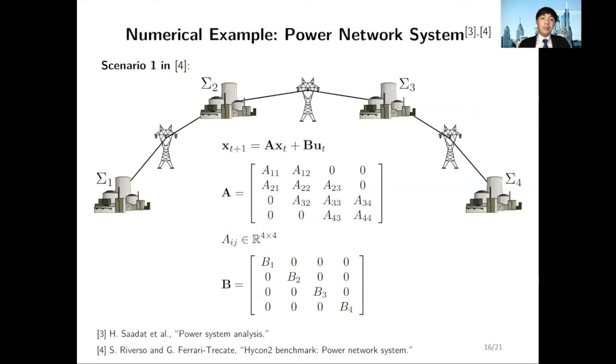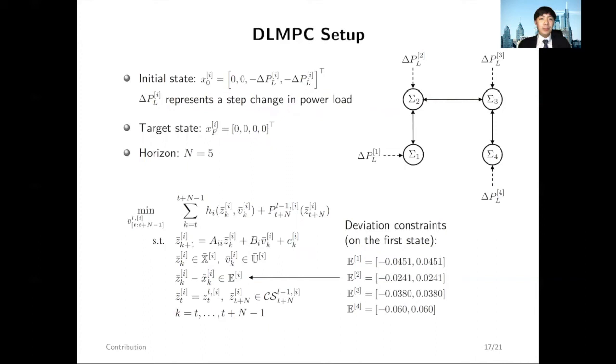As our numerical example, we consider a benchmark power network system composed of four power generation areas. Each area can be described by a four-state linear system and is subject to dynamic coupling effects from neighboring areas. The control goal is to regulate all states to the equilibrium, in our case the origin.